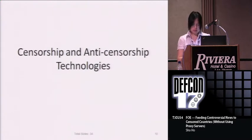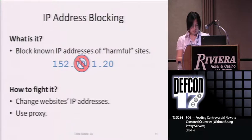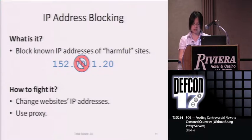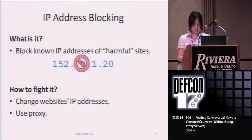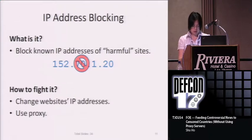Let's take a look at the most commonly used censorship technologies and how to circumvent each of them. First, IP address blocking. This is the most basic censorship technique — the censors simply block all harmful IP addresses at the national firewall. Fighting IP blocking is also straightforward: we can keep changing our website's IP addresses or tell users to use proxy servers. After a while, the censors realize it is difficult to catch up with all the new IP addresses, so they begin to use a new blocking technique.